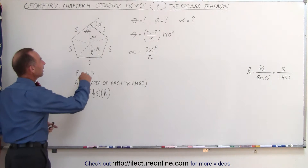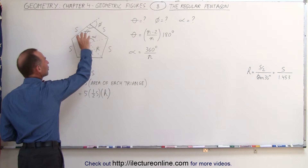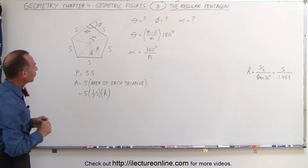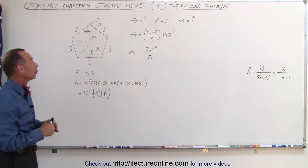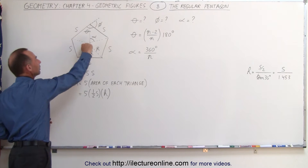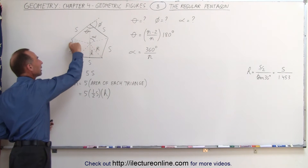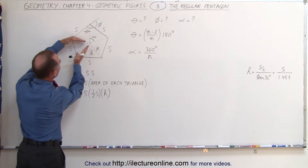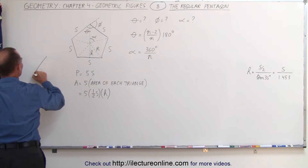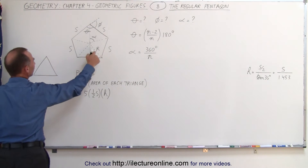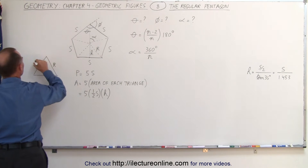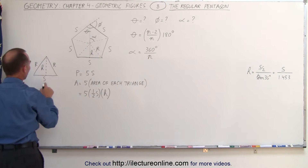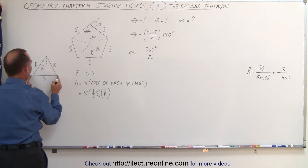I've drawn some lines in here in such a way that you can represent a regular pentagon by five similar triangles. Each triangle is an isosceles triangle, which means that the two legs of the triangle are equal in length. They are not equal in length to the base side of each triangle. When you take one of these triangles out, the sides are called R and R, the base is called S, and the height is called H, so that the area of this triangle will be half the base times the height.